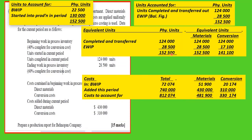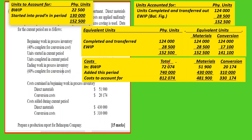The next step is to account for the costs. Beginning work in progress had materials costs of $51,900 and conversion costs of $20,174, giving a total beginning WIP cost. Current period additions are $433,000 for direct materials and $310,000 for conversion costs. Adding everything together gives a total cost to account for of $812,074.